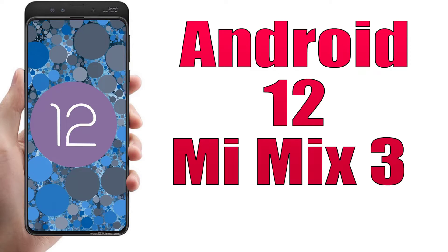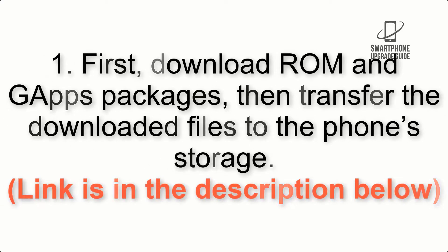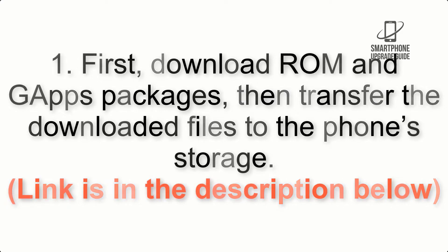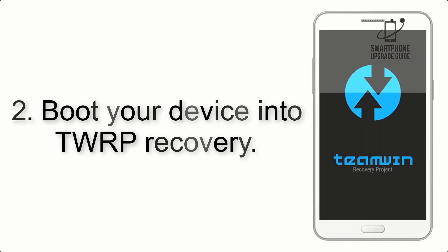Install Android 12 on Mi Mix 3 via Lineage OS 19.1. Please check the description for important notes and all the download links. First, download the ROM and GApps packages, then transfer the downloaded files to the phone storage. The link is in the description below.